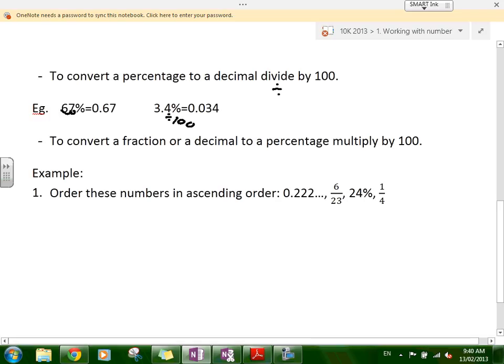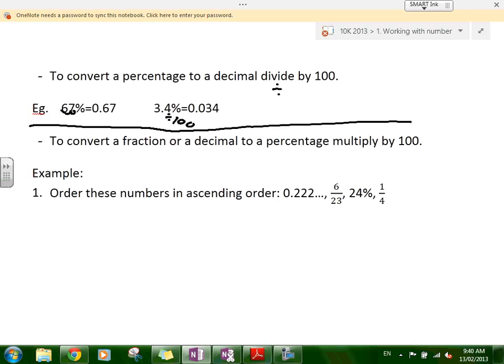And to convert a fraction or a decimal to a percentage - this is going the other way - all you do is multiply by 100. That's all you have to do. Because a fraction and a decimal is out of 1, and percentage is out of 100. So from out of 1 to out of 100, you just multiply by 100.